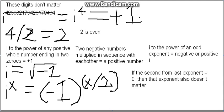i to the power of 5 equals positive i. i to the power of 6 equals negative 1. i to the power of 7 equals negative i.